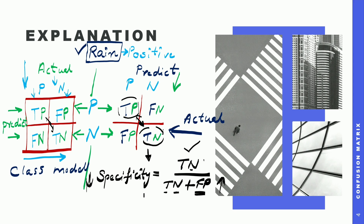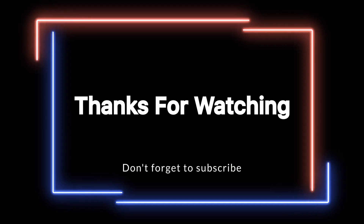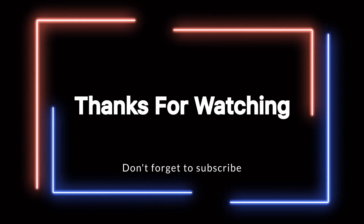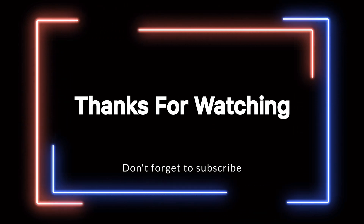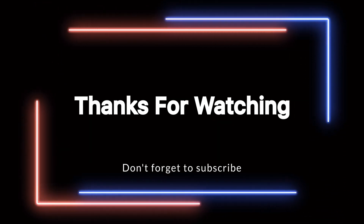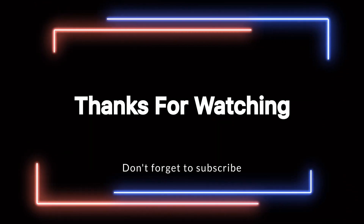These are all the formulas derived from the confusion matrix. The confusion matrix is super clear now — how the labeling works and how we determine True Positive and True Negative. We will move to two use cases in the next session. Thank you for listening. Please subscribe and give your valuable comments.